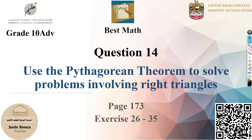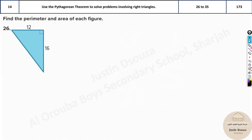Moving on to the 14th question, that is to use the Pythagorean theorem. It is to solve problems involving right angles. Whenever we have a right triangle, then only we can use the Pythagorean theorem. Now we will look at some problems.